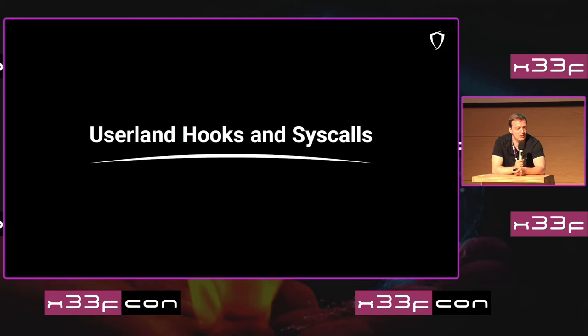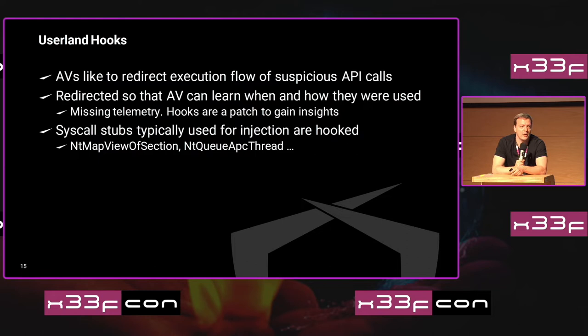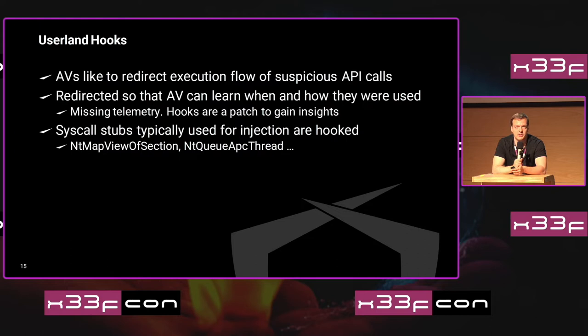Userland hooks are a quite old concept, widely used in the security scene. Antivirus products really like to redirect the execution flow of suspicious API calls so they can understand when a certain API call was used by a process and with which parameters. They do this because there is not a kernel callback for every single system call. System calls used for process injection are obviously hooked because the antivirus product is interested in why and how the API is used.